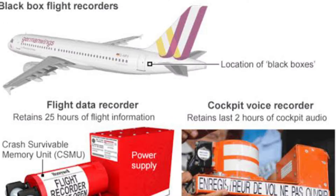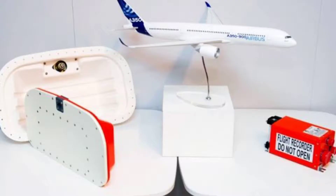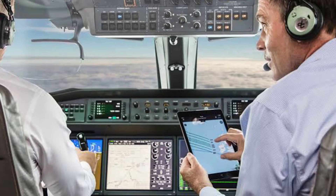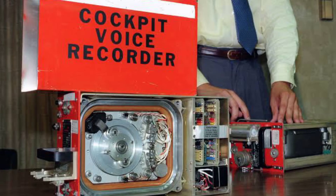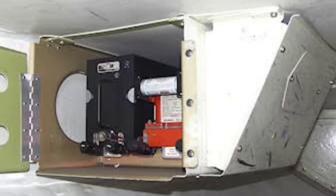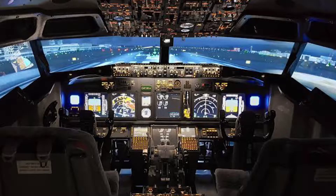What is black box? Cockpit Voice Recorder and Flight Data Recorder — CVR and FDR — are commonly referred to as black box. Black box is a device that records the conversation of pilots and logs flight data. Black box is in fact two pieces of separate equipment, the CVR and FDR, and both pieces are mandatory for any commercial aircraft.